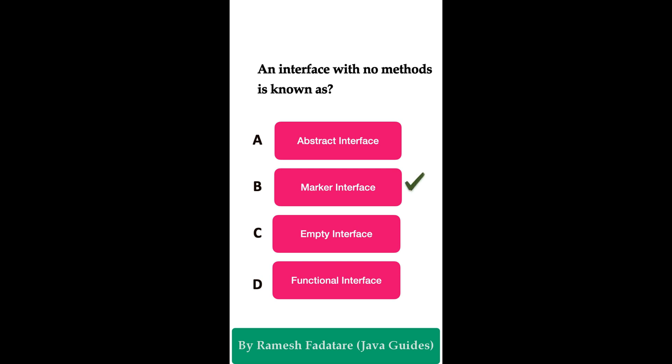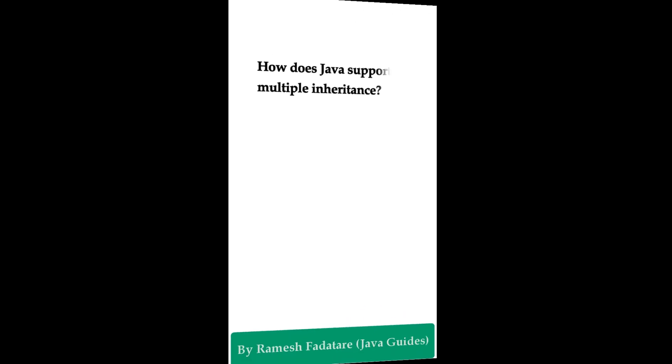The correct answer is option B: marker interface. In Java, an interface with no defined methods is known as a marker interface. It is used to mark classes that support certain capabilities. Remember: an interface with no methods is called a marker interface, and it is useful to mark classes that support certain capabilities.